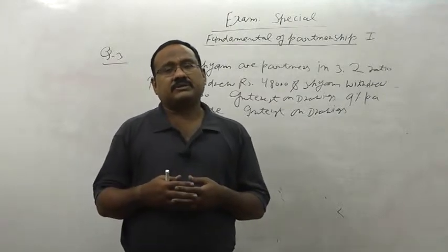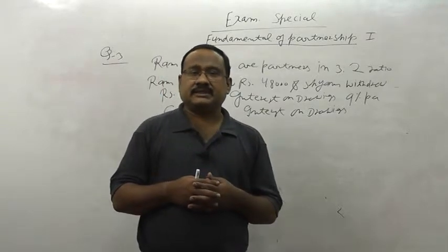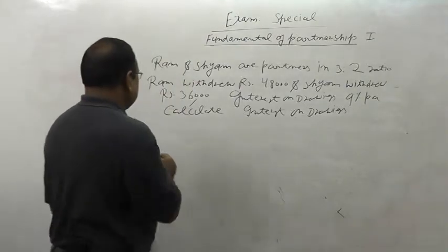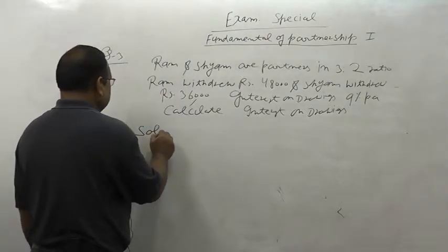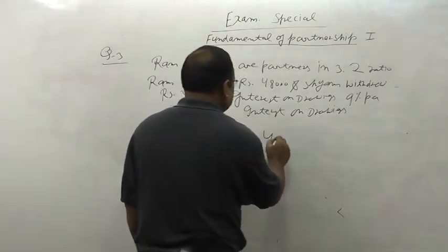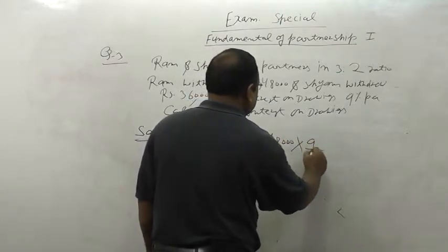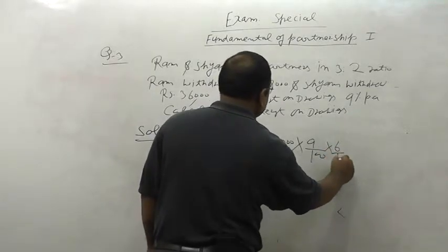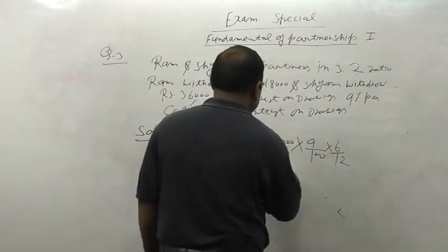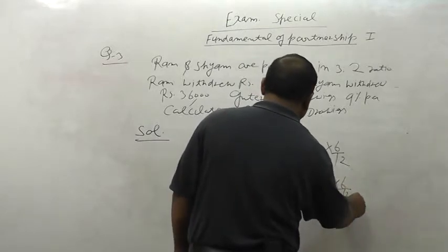The formula is: Amount × Rate/100 × Duration. For Ram: IOD = 48,000 × 9/100 × 6/12. For Shyam: IOD = 36,000 × 9/100 × 6/12.